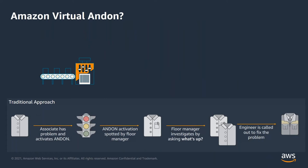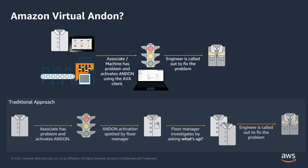Let's see what Amazon Virtual Andon could actually bring to the table. The first difference is that both the associate as well as the machine do the alerting — it's not just the associate alone. The alerting interface is on a tablet or a smartphone with multiple options, and these options help route the issue to the right engineer automatically, without another layer of manual intervention through the factory manager. Overall, the average first response time is shrunk.